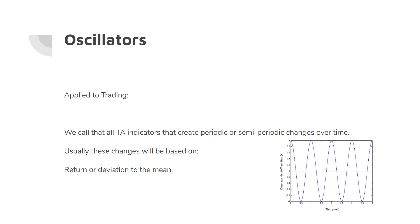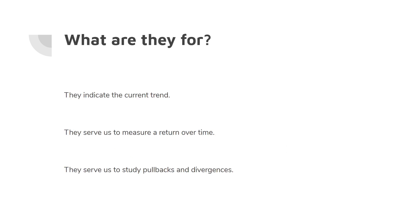We are going to use oscillators. Oscillators applied to trading can be defined as any technical analysis indicator that creates periodic or semi-periodic changes over time, usually based on the return of a certain asset or its deviation to the mean. Their first use is to indicate the current trend — for example, if the RSI of 14 periods is below 50, we have bearish strength, and above 50, bullish strength. They are also great for measuring return over time and studying pullbacks and divergences.